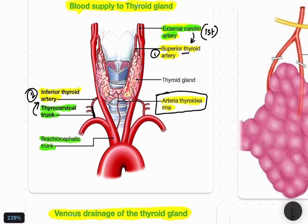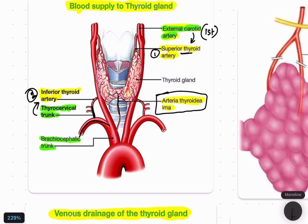So we have three arteries: the superior thyroid artery from the external carotid artery, the inferior thyroid artery from the thyrocervical trunk of the subclavian artery, and the thyroidea ima artery directly from the arch of the aorta.